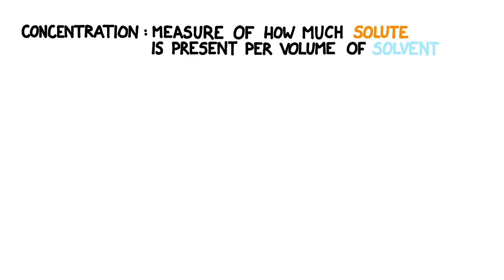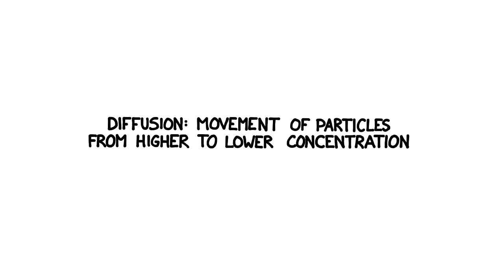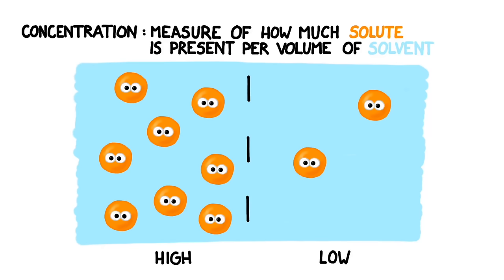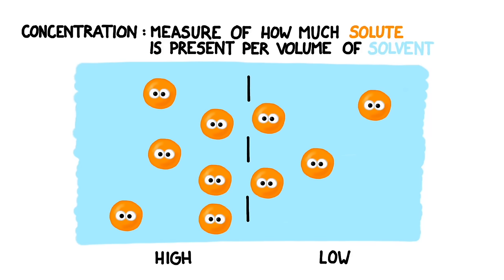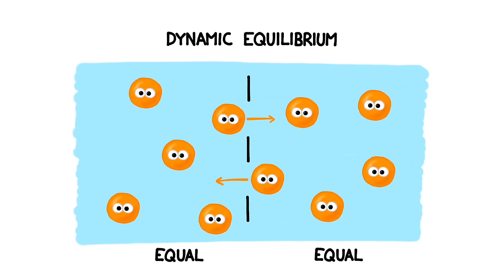Concentration is a measure of how much solute there is per volume of solvent — in other words, whether the liquid is more salty or more watery. We'd usually expect that the molecules would follow a process called diffusion: they would flow from areas of higher to lower concentration. Eventually, they will reach equilibrium, where there will be an equal concentration on both sides of the membrane.